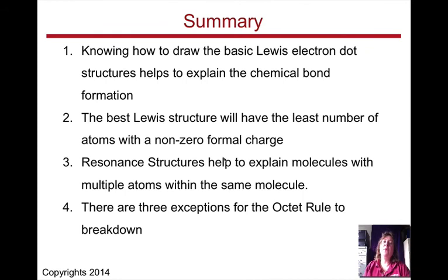So the summary for our unit that we've just completed is: one, we know how to draw basic Lewis electron dot structures, and it helps to explain chemical bond formation. The best Lewis structure will have the least number of atoms with non-zero formal charge. Three, resonance structures help to explain molecules with multiple atoms within the same molecule. And there are three exceptions to the octet breakdown.